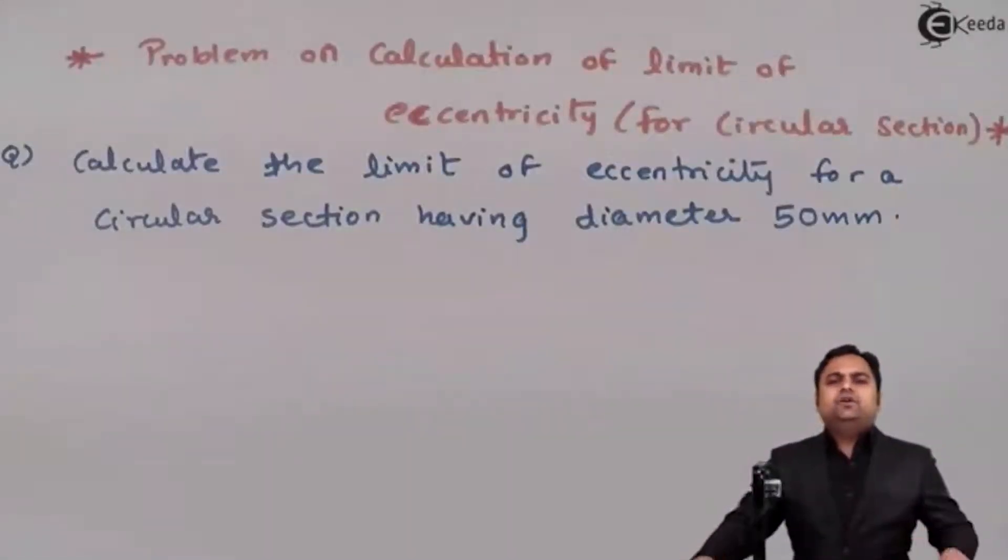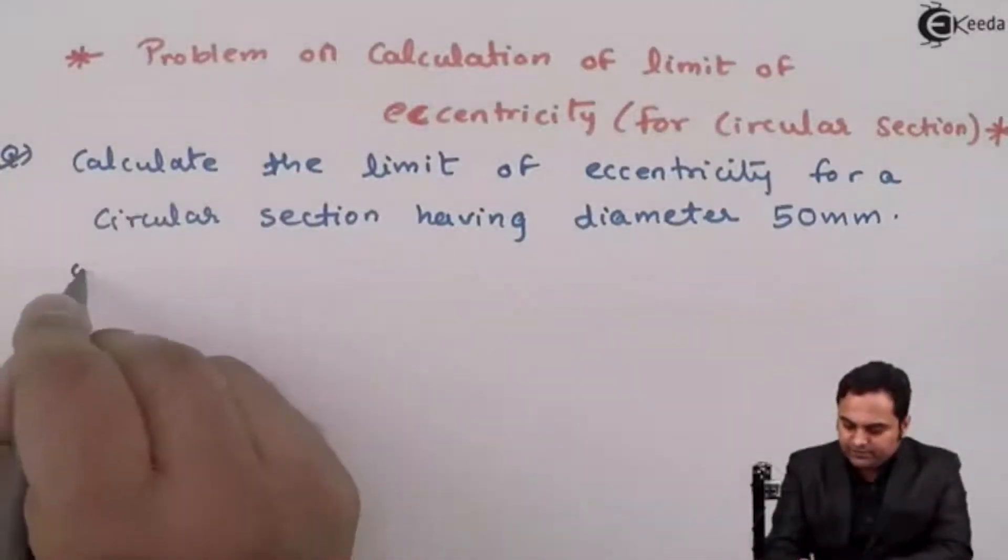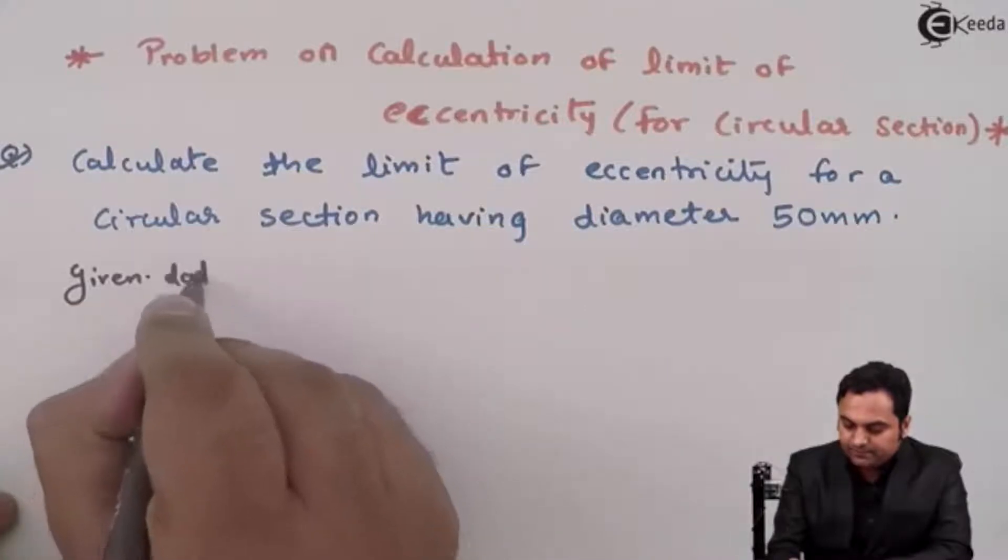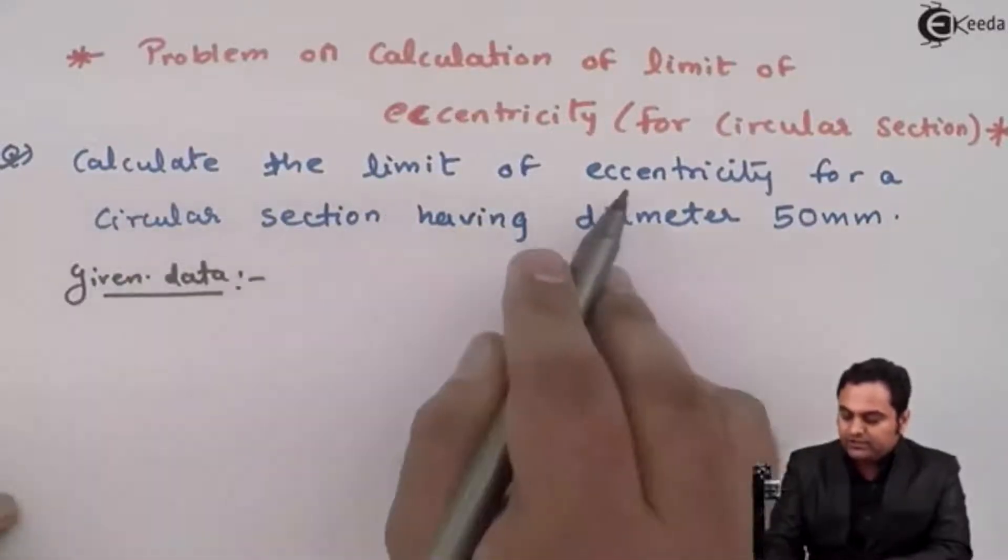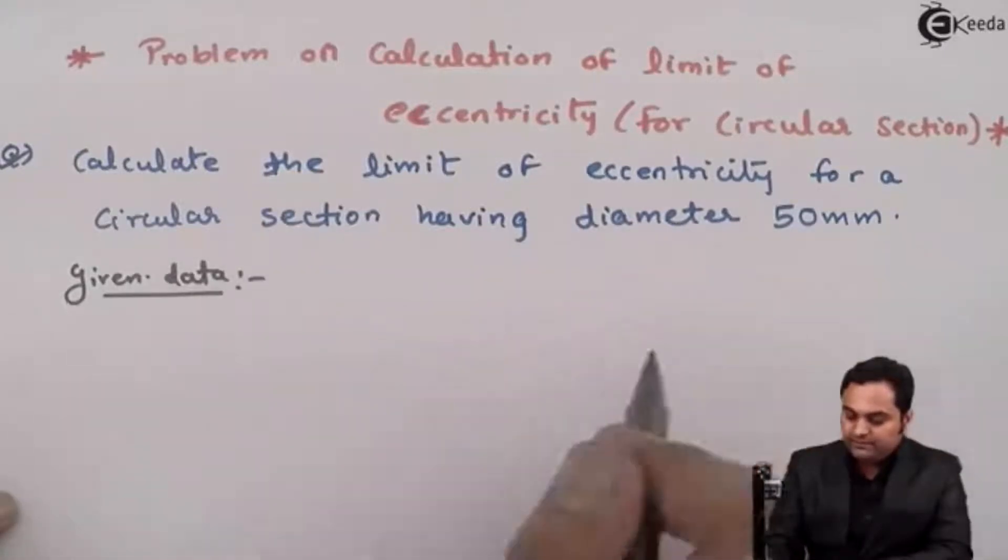Hello friends, here in this video we will see a problem on calculation of limit of eccentricity for a circular section. Here is the question which we have. It is given that calculate the limit of eccentricity for a circular section having diameter 50 mm.